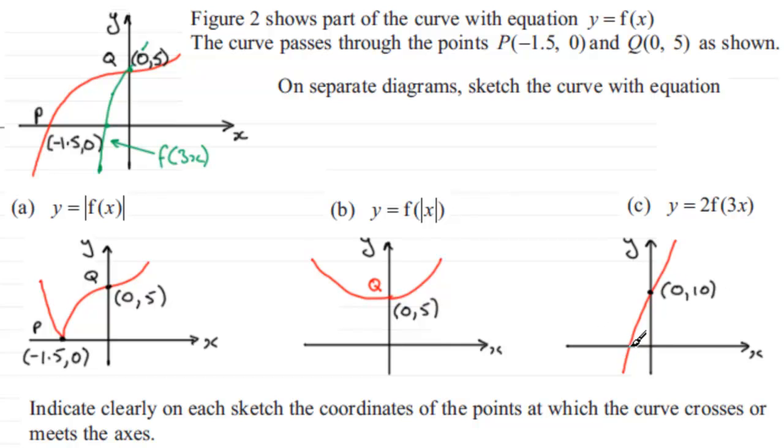As for this point here, remember it was this point over here and it remained invariant when we stretched it by a factor of 2 parallel to the y-axis. This point was a third this distance, so a third of minus 1.5 is going to be minus 0.5. So the coordinates of this point here are going to be (-0.5, 0).